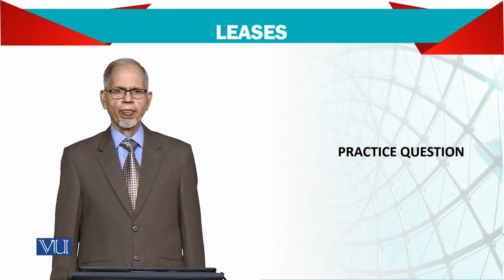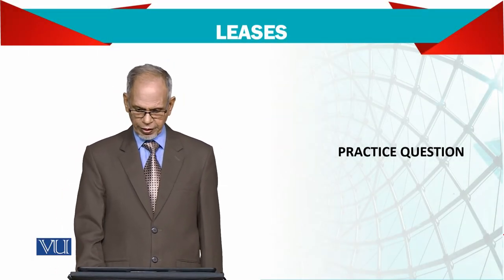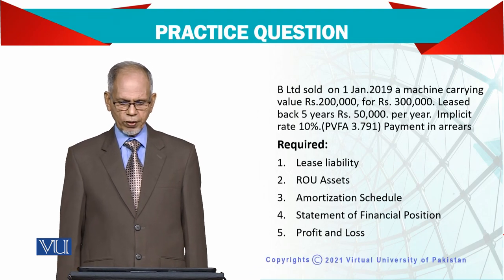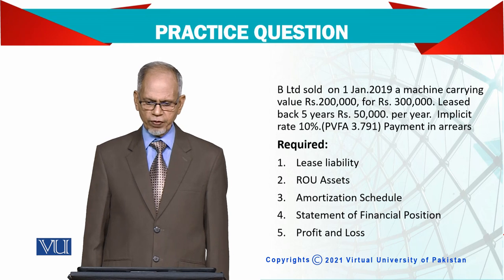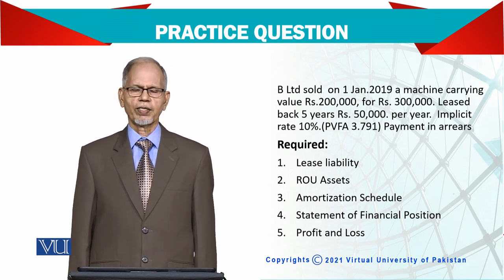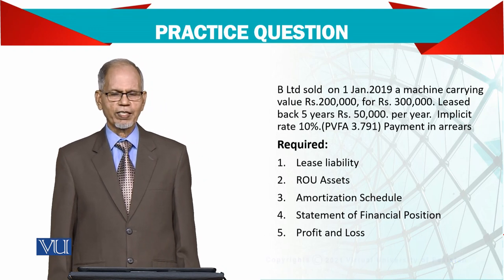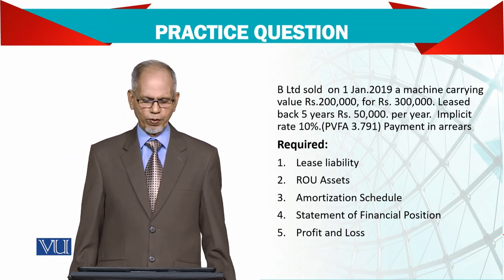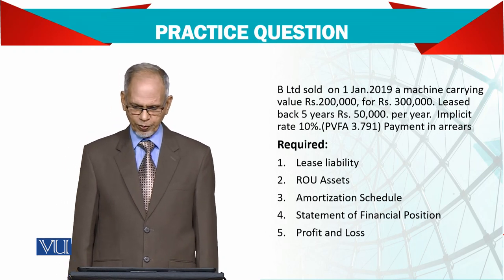Let's see a question on sale and leaseback. B Limited sold on 1st January 2019 a machine with a carrying value of 200,000 for 300,000. Clearly, the asset is being sold for more than the carrying value, so there is a profit of 100,000.